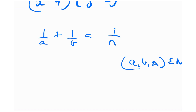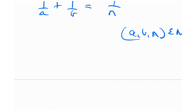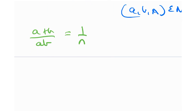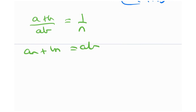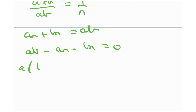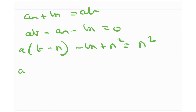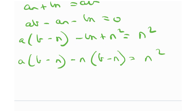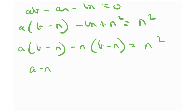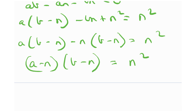To solve this, we apply SFFT. Getting rid of fractions gives ab = an + bn. Rearranging: ab - an - bn = 0. Taking a common gives a(b - n), and then adding n² to both sides and factoring gives (a - n)(b - n) = n². We've factorized the equation using SFFT.